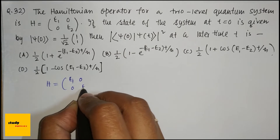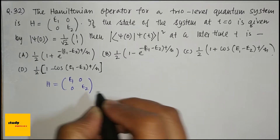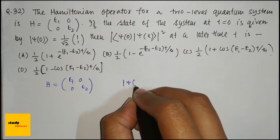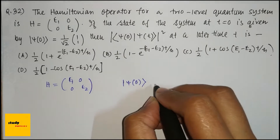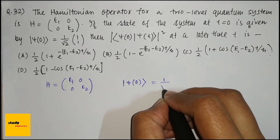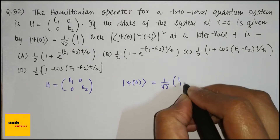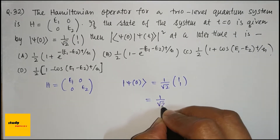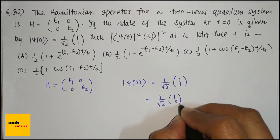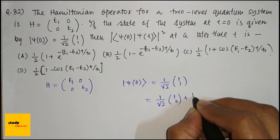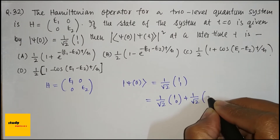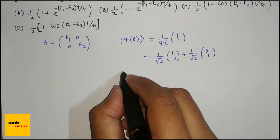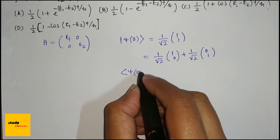So the Hamiltonian is the diagonal matrix E1, 0; 0, E2. The initial state psi of 0 is 1 by root 2 times (1, 1). We can write this as 1 divided by root 2 times (1, 0) plus 1 divided by root 2 times (0, 1).